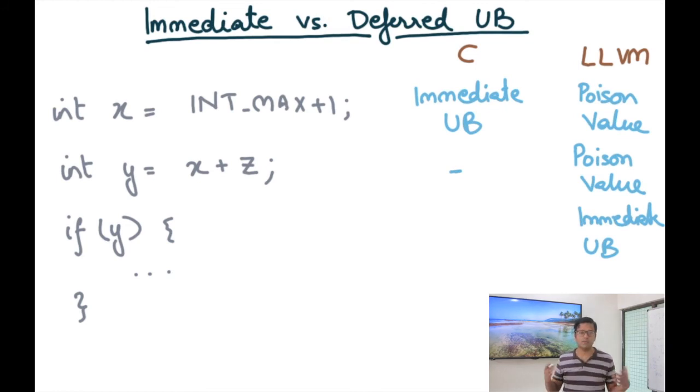then it just kind of keeps propagating the poison value and the program keeps executing. But as soon as it's used in some kind of dangerous operation like a memory used as a memory address or as a branch condition, then I'm going to trigger immediate UB.